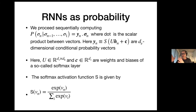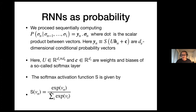We compute all the conditionals through this expression. Each conditional P(sigma N | sigma one through sigma N minus one) is a dot product of Y_N times sigma_N (the one-hot encoding), where Y_N is an extra softmax layer in the RNN. The softmax activation function is the exponential of the components divided by the sum over the vector, so that it is normalized. This softmax layer ultimately provides the conditional probability distribution.